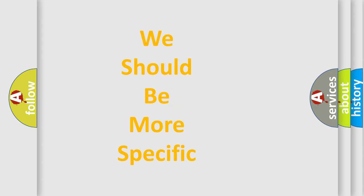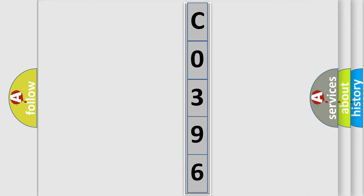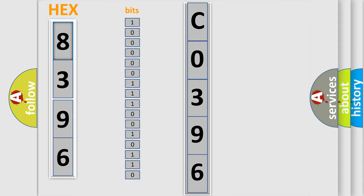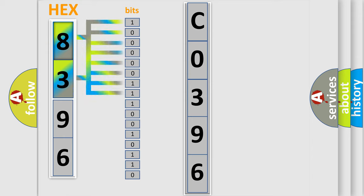The following demonstration will help you look into the world of software for car control units. The error code is split into two bytes consisting of 16 bits. One bit is the basic unit that each computer works with. The bit has two logical states: zero, low level, and one, high level. By combining the first two bits, the basic character of the error code is expressed.